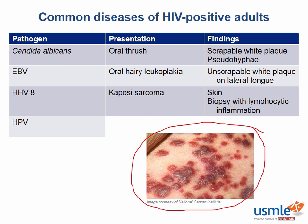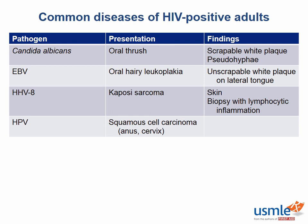Here is a classic image of Kaposi's sarcoma on the skin. Human papillomavirus is an oncovirus and in the immunosuppressed can lead to squamous cell carcinoma of the anus or of the cervix. It can also cause this in immunocompetent folks, but it will cause more significant carcinoma in folks that are immunocompromised.